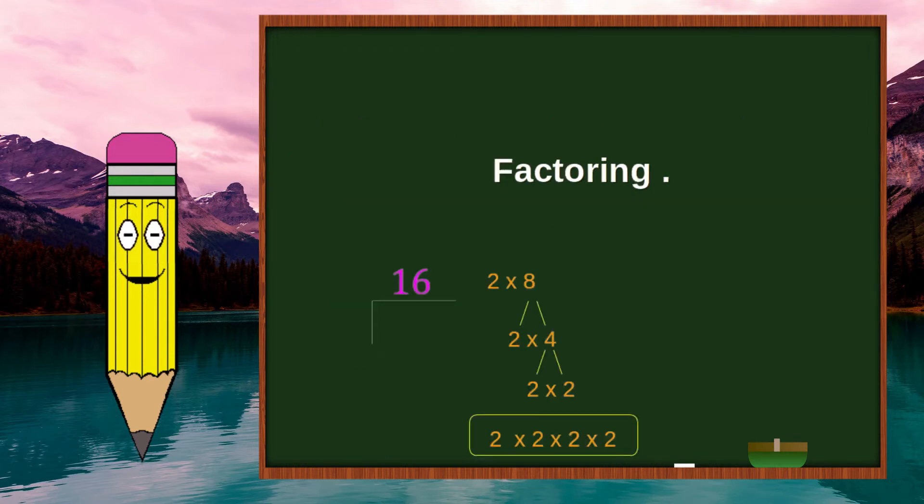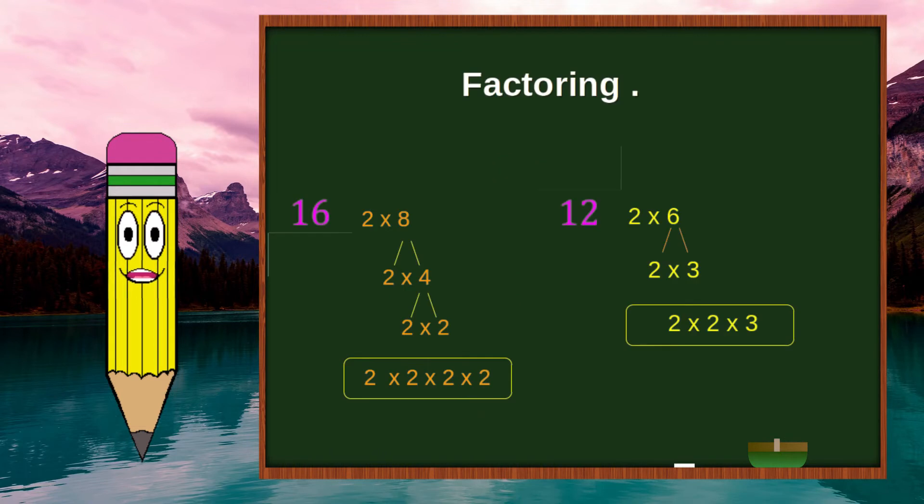Factoring: 2 times 8, 8 is 2 times 4, with 4 being 2 times 2. Factoring further. Canceling out duplications.